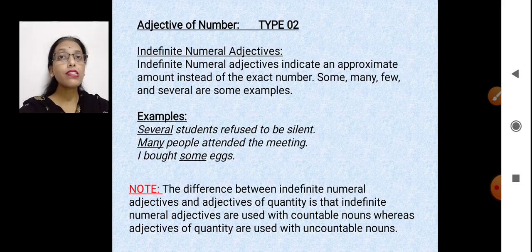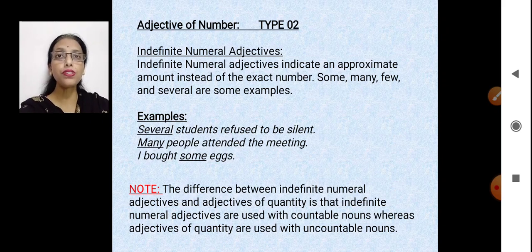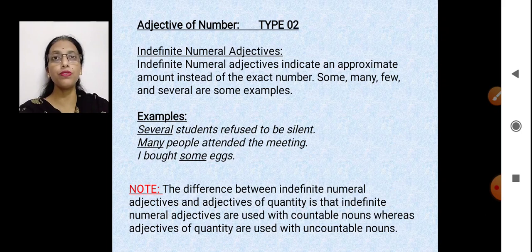You might ask: what's the difference between adjective of quantity and indefinite numeral? Adjective of quantity is for uncountable nouns like milk, sugar and water. But indefinite numeral adjectives are for countable nouns like students, pens, vehicles and houses — things which we can count.